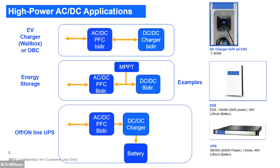For example, in EV chargers, if we are thinking vehicle-to-grid, we need AC-DC and DC-DC bidirectionals. In terms of energy storage, when we want to supply the grid, we also need this kind of bidirectionality. With offline UPS, we also need this kind of capability. Especially now with new devices in silicon carbide and GaN, we are getting more integration, smaller size, and more efficiency.